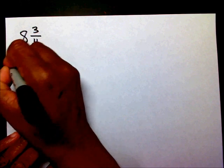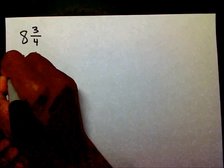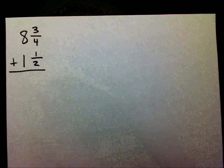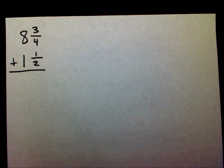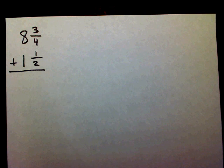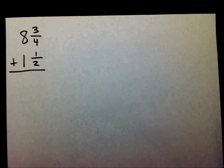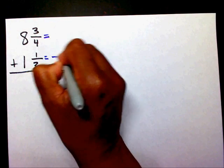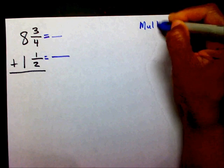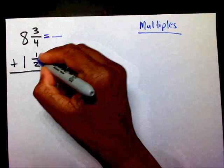Alright, let's go with 8 and 3 fourths plus 1 and 1 half. The first thing I've always told you is that whenever you add or subtract fractions, you have to have the same denominator. You can't do anything until you have the same denominator. So we need to get a common denominator, and we're going to go through the same process that we've done before. I'm going to list my multiples.